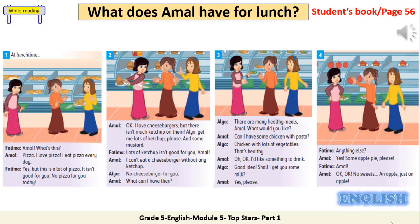Okay, I love cheeseburgers, but there isn't much ketchup on them. Alya, get me lots of ketchup, please, and some mustard. Lots of ketchup isn't good for you, Amal. I can't eat a cheeseburger without any ketchup. No cheeseburger for you. What can I have then? There are many healthy meals, Amal. What would you like? Can I have some chicken with pasta? Chicken with lots of vegetables — that's healthy. Oh, okay. I'd like something to drink. Good idea. Shall I get you some milk? Yes, please. Anything else? Yes, some apple pie, please. Amal. Okay, okay. No sweets. An apple. Just an apple.